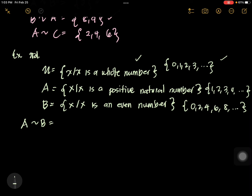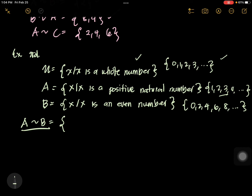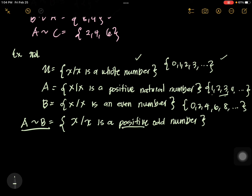For A minus B, the difference of A and B: we cancel all elements in A that are in B — cancel 2, 4, 6, 8, and so on. What is left is {1, 3, 5, ...}, which is x such that x is a positive odd number. It is important to specify 'positive' because if you don't, negative numbers might be included.